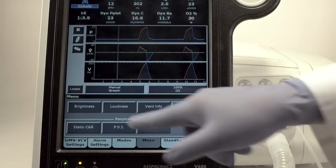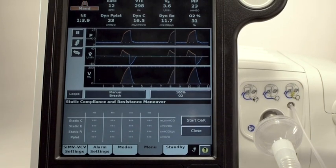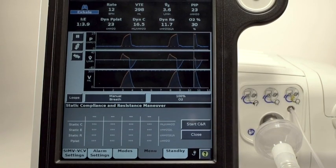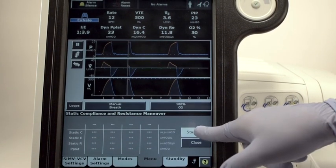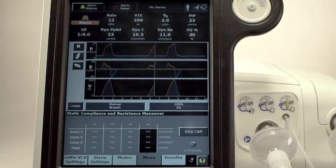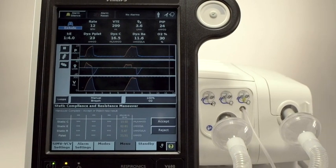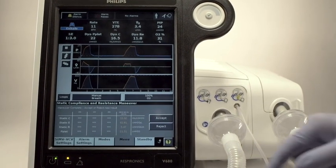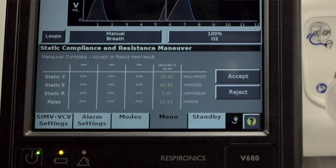The window opens for the static compliance and resistance tests. The static pressure maneuver has long been considered the gold standard for measuring plateau pressure. Touch Start CNR and V680 will initiate an inspiratory pause long enough to obtain a stable static environment and then measure the plateau pressure, static compliance, static resistance, and static elastance. Note the static plateau pressure measurement and compare this to the value you noted for the dynamic plateau pressure prior to the start of the static maneuver. The two measurements should be within plus or minus one centimeter of water of each other.